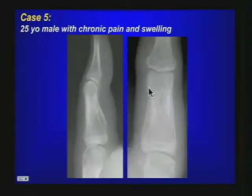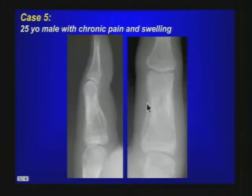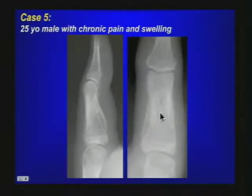Finally, case number five: a 25-year-old male with chronic pain and swelling for several weeks to a month. On radiographs of the thumb, there is periostal bone formation along the proximal phalanx, as well as sclerosis within the proximal phalanx. It doesn't look very aggressive — it appears relatively chronic.